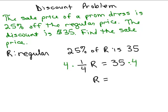So R is 35 times 4. Let's see, 35 times 2 is 70. So I'm going to multiply by 2 to get 140. So it looks like the regular price of that dress was $140.